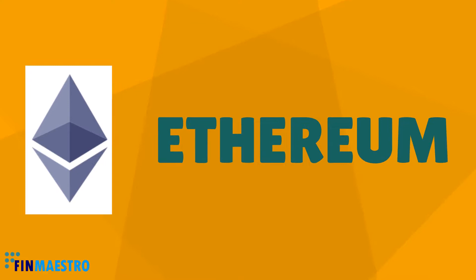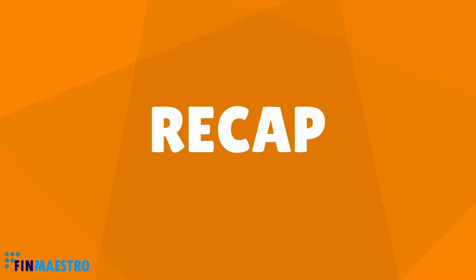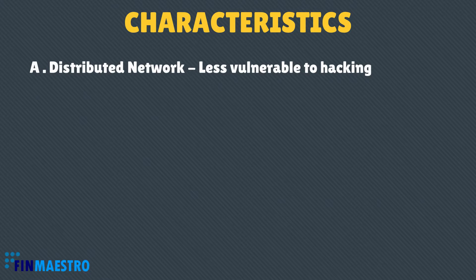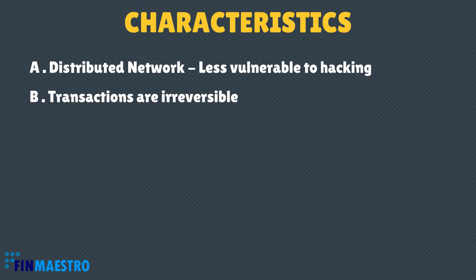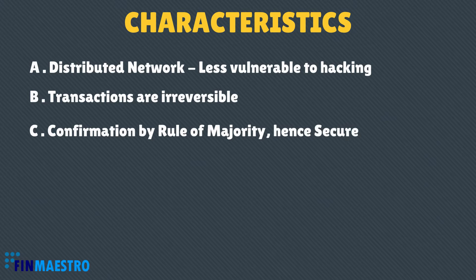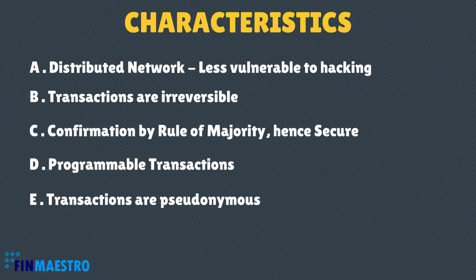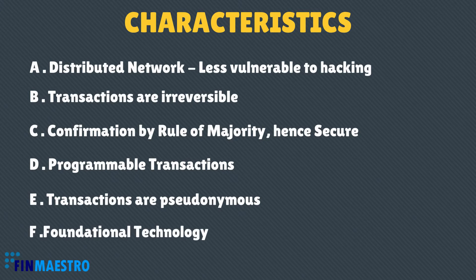Ethereum blockchain is an example of this. Let's recap the characteristics of blockchain technology: distributed network and hence less vulnerable to hacking; transactions are irreversible, creating an audit trail; requires confirmation by the majority, hence secure; programmable transactions; all data is publicly available yet transactions are pseudonymous; and it is a foundational technology that can revolutionize the way financial transactions happen.